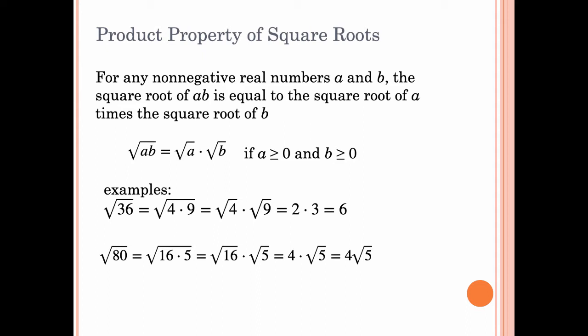Here are some examples. The square root of 36 can be broken down into the square root of 4 times the square root of 9. We have the square root of 4 times the square root of 9, which is 2 times 3, which is 6. And the square root of 36 is 6 — this is showing how this works.